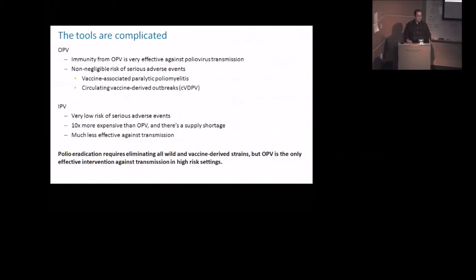So OPV, this live vaccine, is very effective against polio transmission. It provokes immunity in the intestines, which is the primary site of replication. It substantially reduces the probability of fecal-oral transmission. But it does come with a non-negligible risk of serious adverse events. So what the serious adverse event is, is polio.